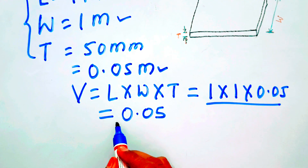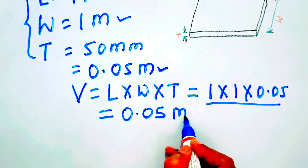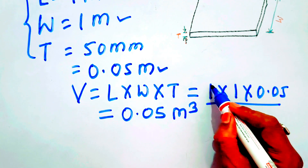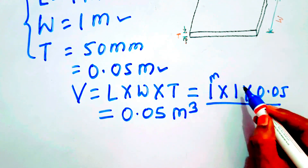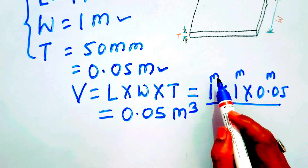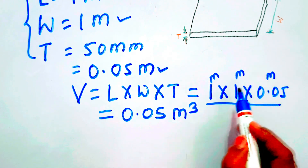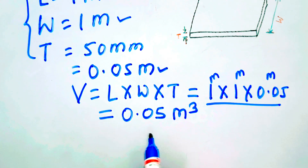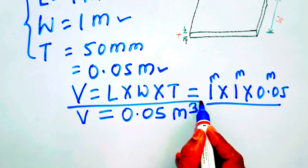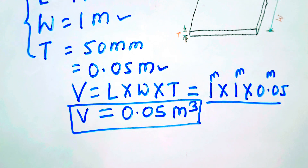The value we obtain is 0.05 and the unit of volume will be meter cube. Why meter cube? Because length is in meter, width is in meter, and 0.05 is also in meter, so meter into meter into meter gives meter cube. Hence, the volume of this plate is 0.05 meter cube.